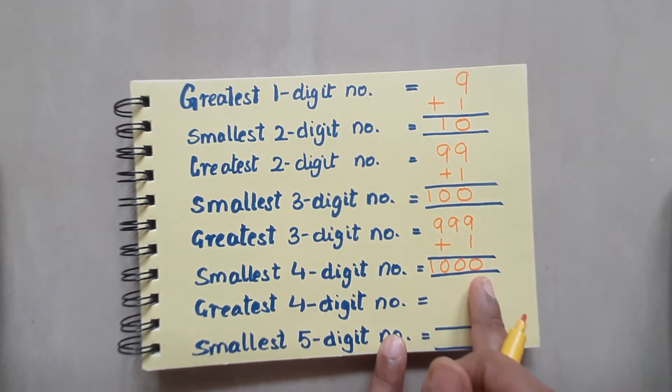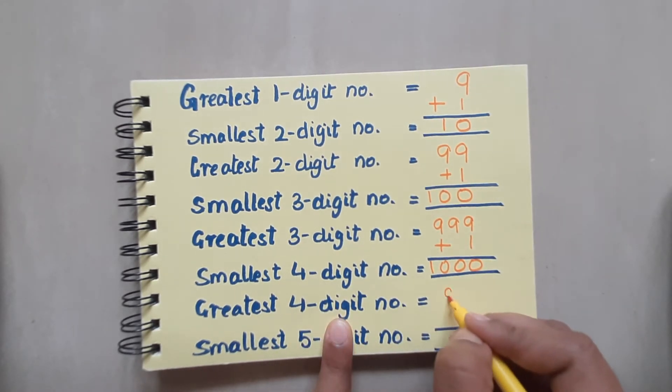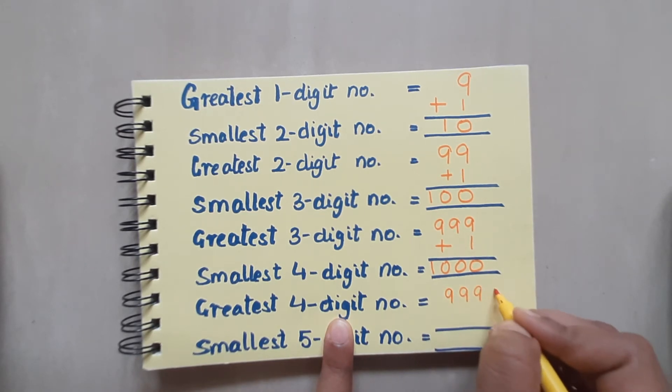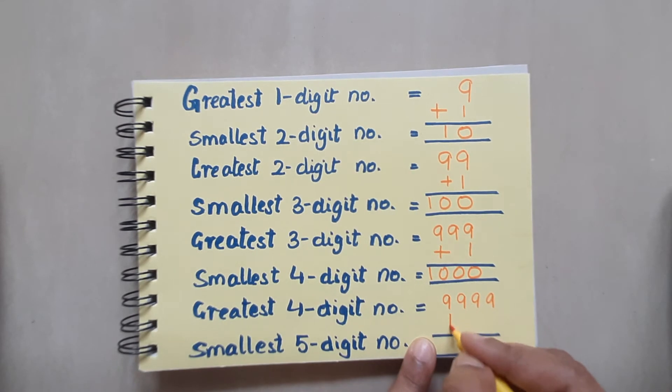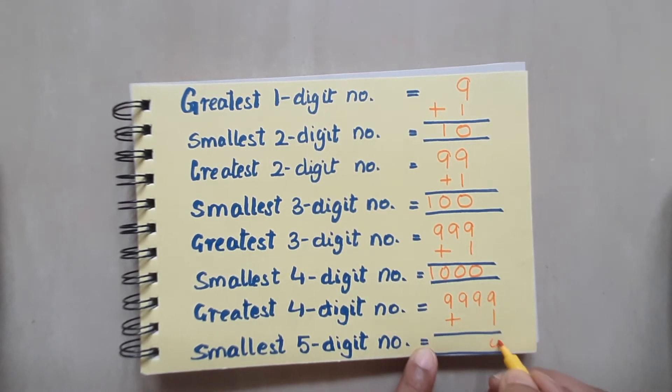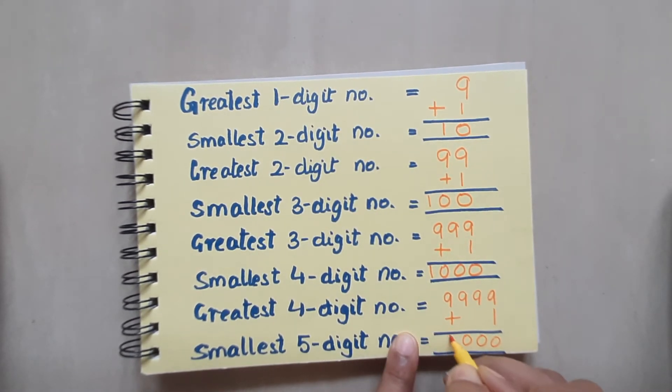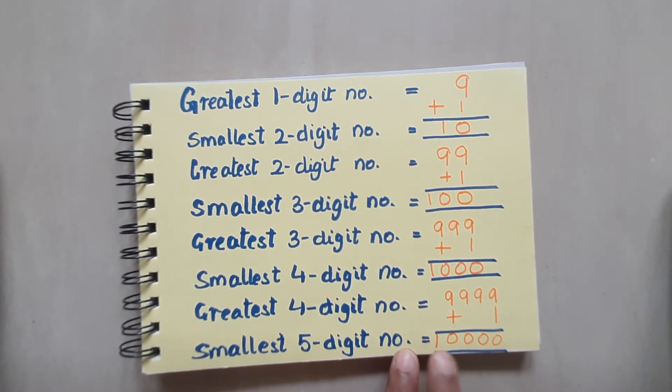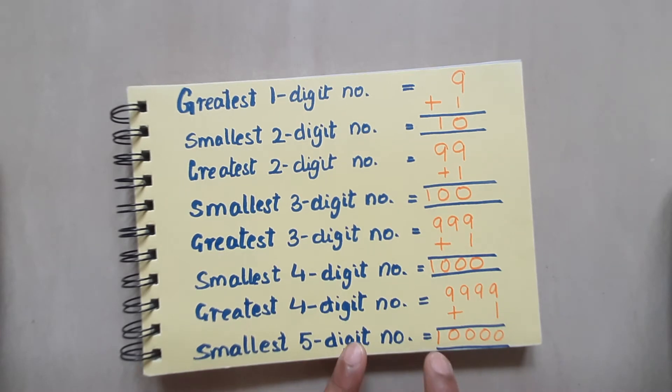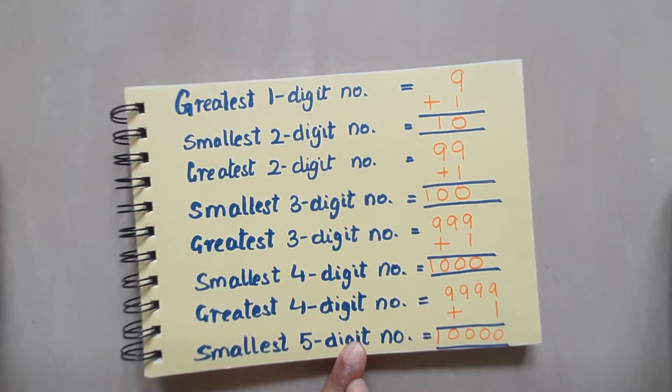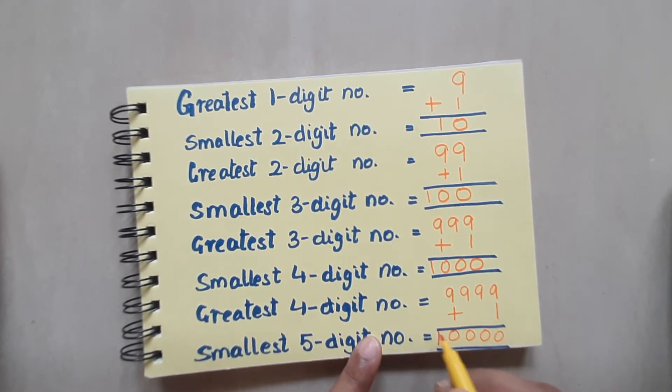So now, till 1000, it has been pretty much clear to you. Now, if I talk about greatest 4 digit number, it will be 9999. And if I add 1 to it, I will get a 5 digit number, which is the smallest 5 digit number. And the new place that has been introduced is your 10,000.